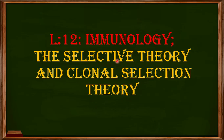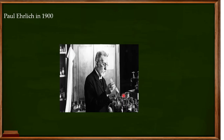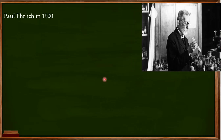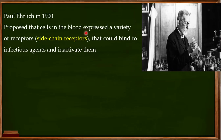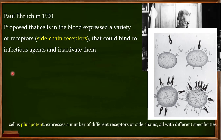I'll also focus on the modified version of the selective theory, known as the clonal selection theory. The selective theory was put forward by Paul Ehrlich in 1900 — a great immunologist. He proposed that the cells in the blood express a variety of receptors on their surface, which he called side chain receptors. He believed these side chain receptors could bind to infectious agents and inactivate them. Ehrlich believed these blood cells were pluripotent in nature, meaning a single type of cell expresses a number of different receptors or side chains on its surface, all with different specificities.